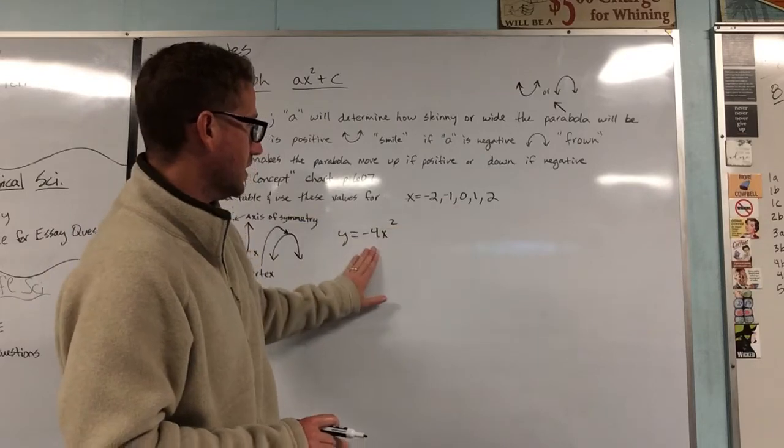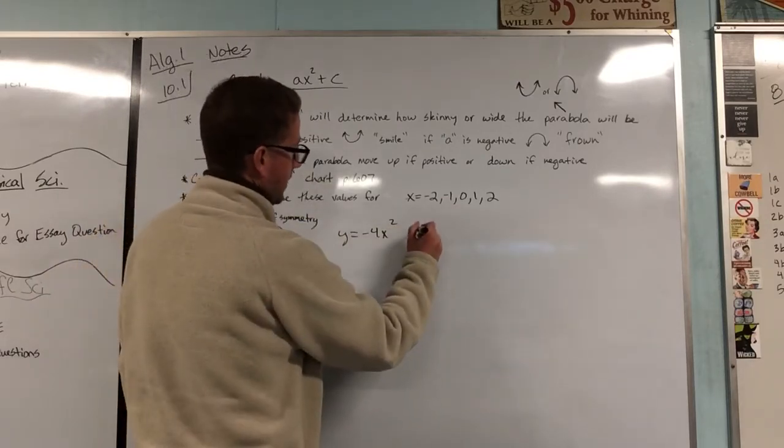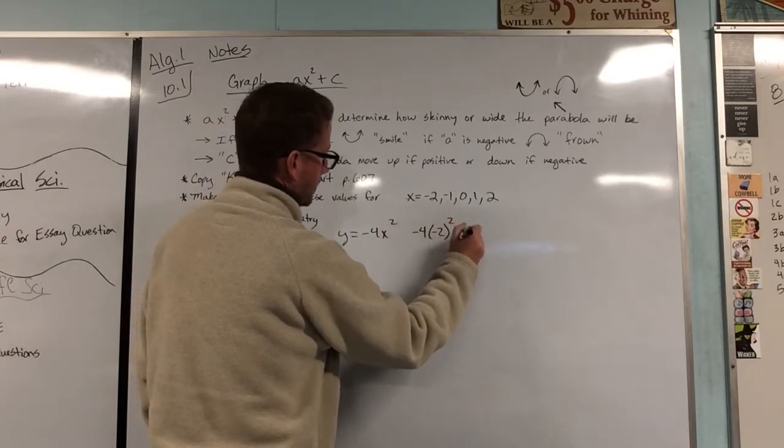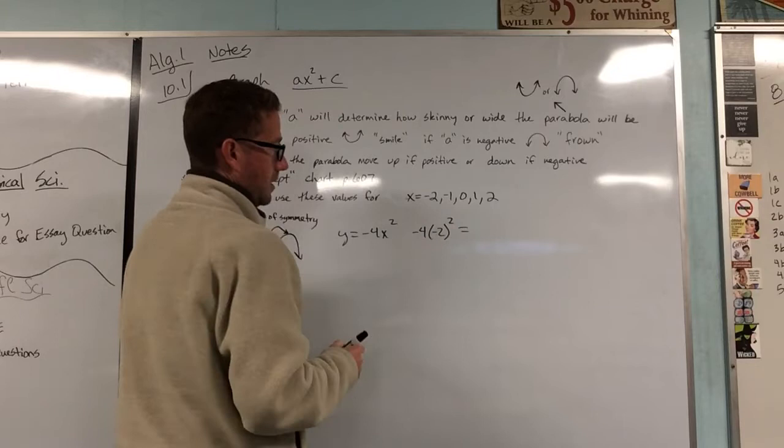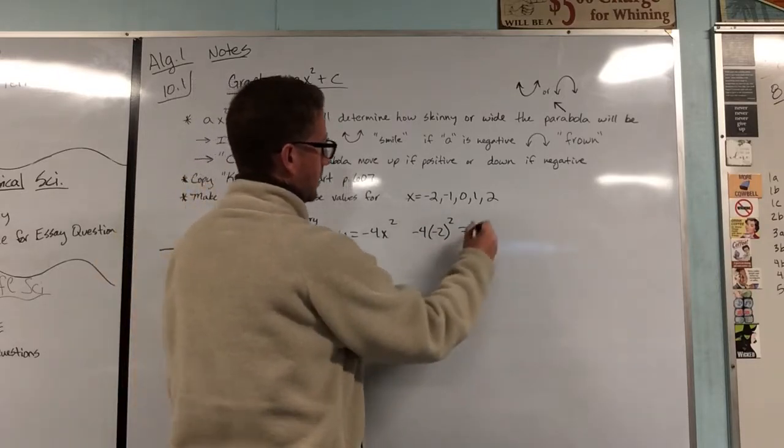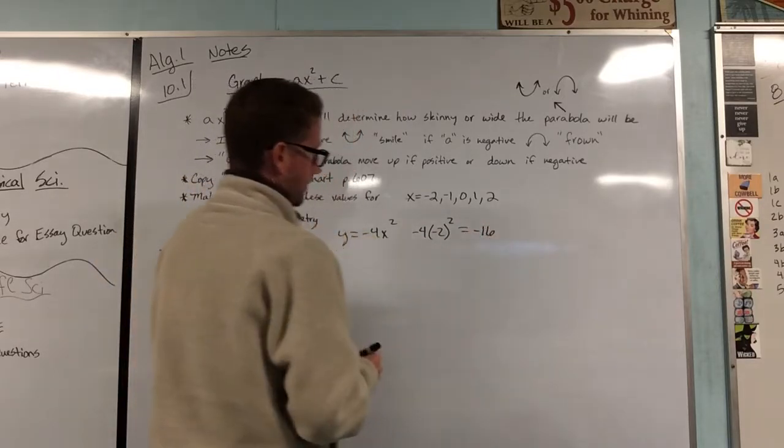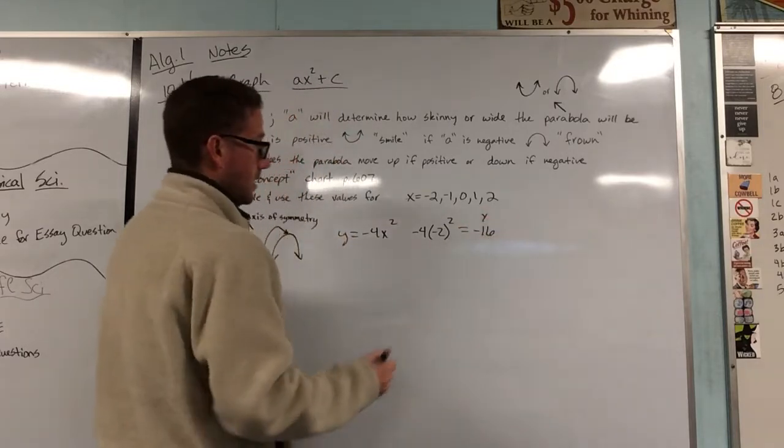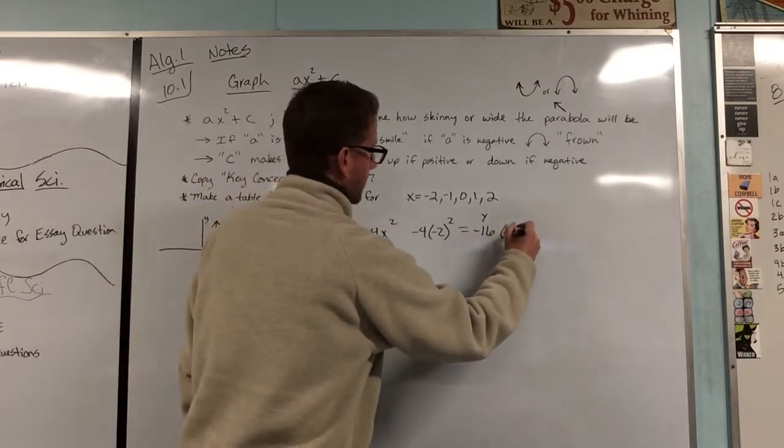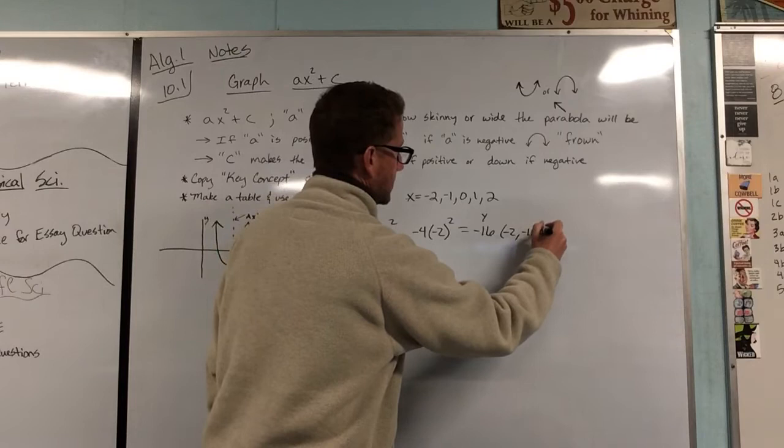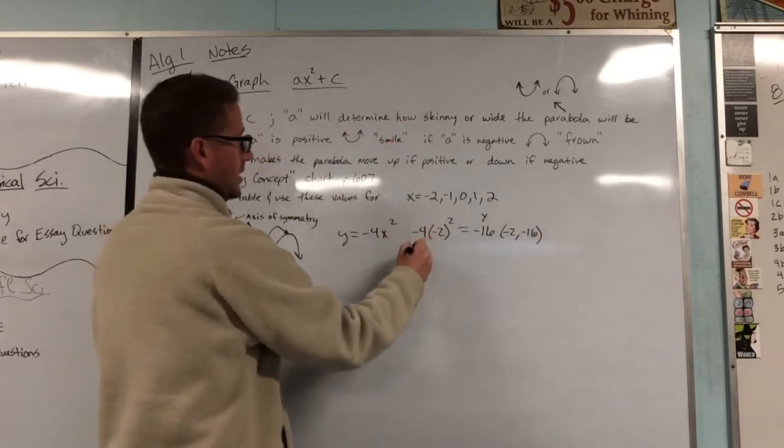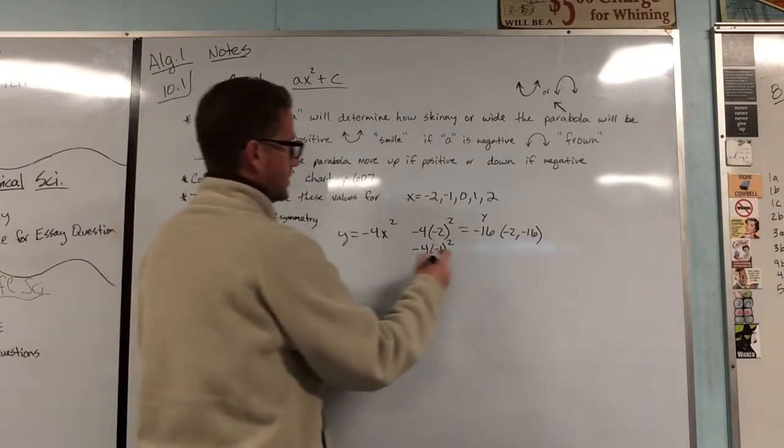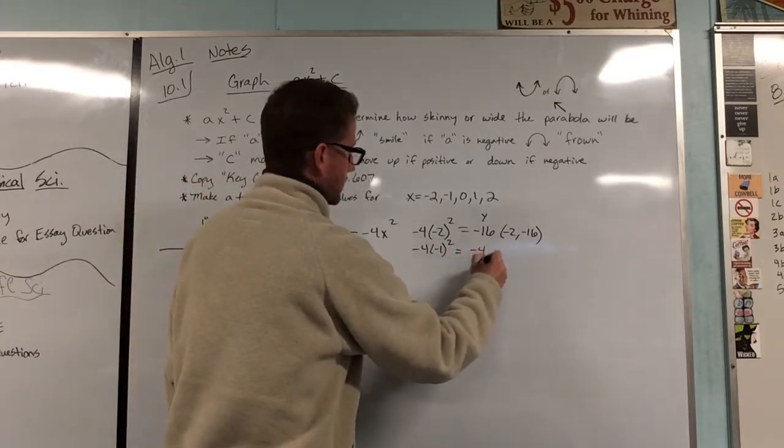These are all the values that we're going to plug in for x. So you would have a negative 4, you would plug in a negative 2, you would square it, negative 2 squared is going to be 4 times negative 4 is negative 16. Now, these values that come out are going to be your y values. So that would make a point of negative 2 comma negative 16.